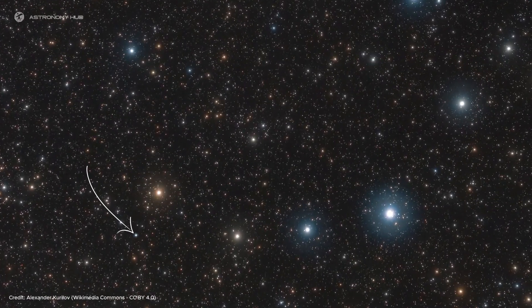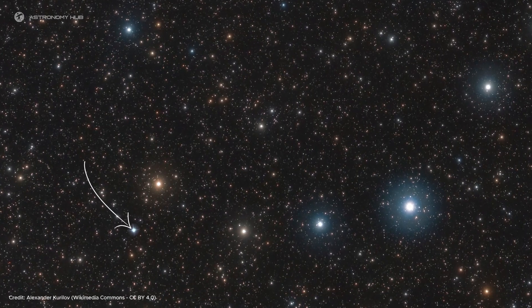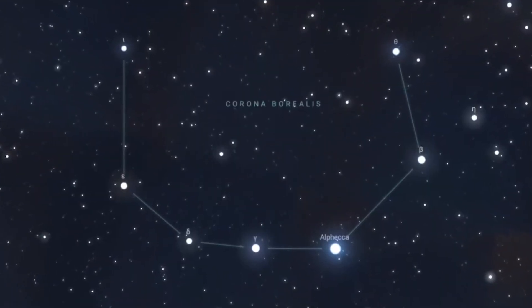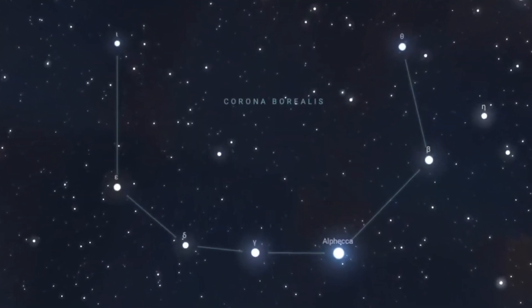First things first, you need to find the right spot in the sky. T Corona Borealis lives in the Northern Crown constellation. But don't worry if you're not an expert stargazer. This constellation is actually pretty easy to find. Look for a semi-circle of stars that looks like a crown or tiara.